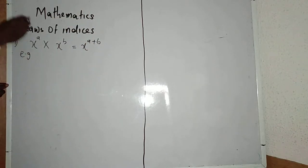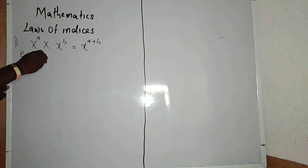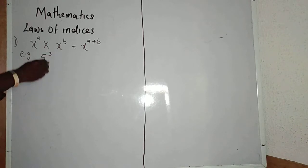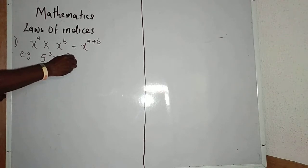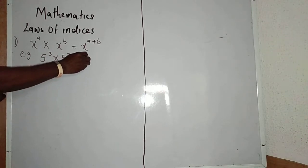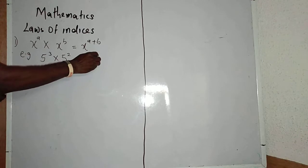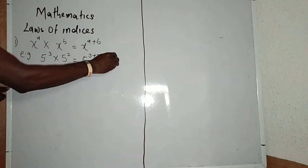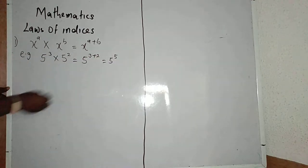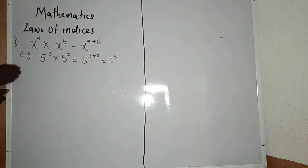Example: if I have 5 raised to power 3 multiplied by 5 raised to power 2, it will be equal to 5 raised to power 3 plus 2, which is equal to 5 raised to power 5.